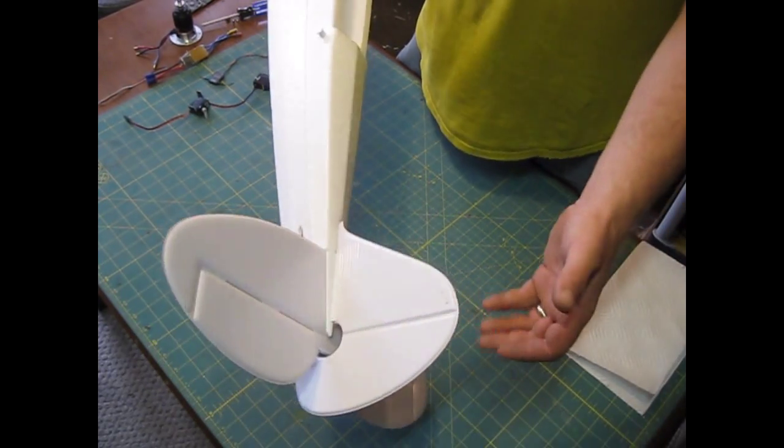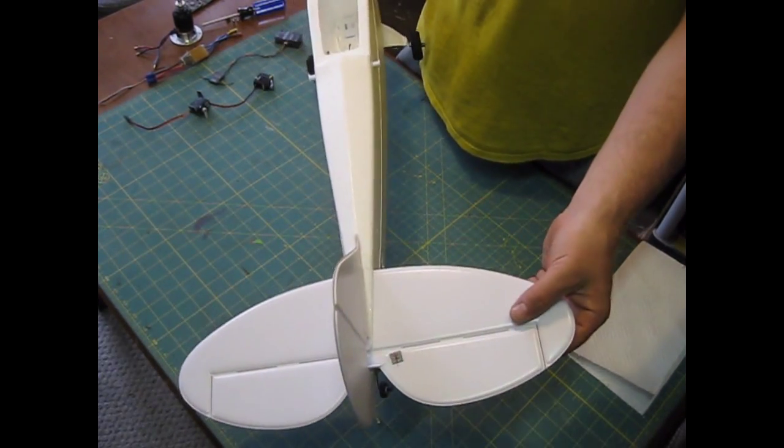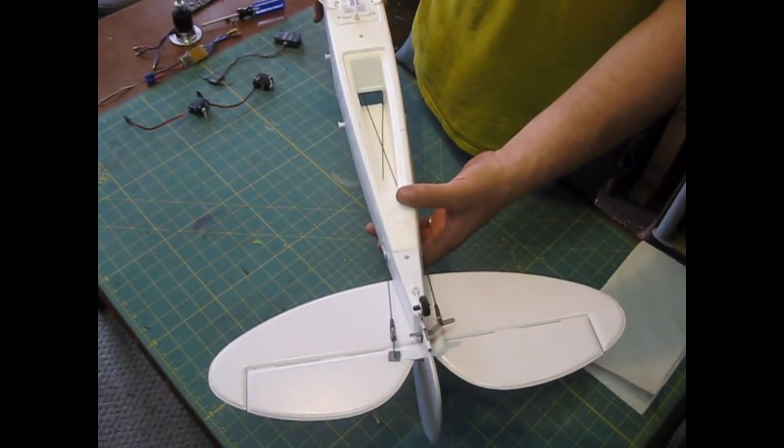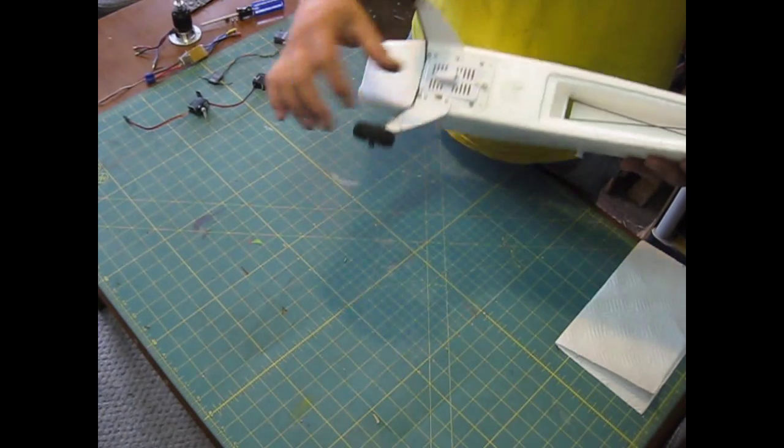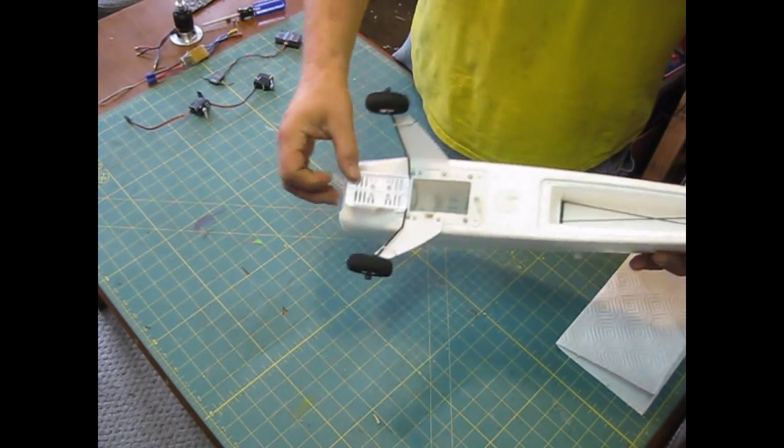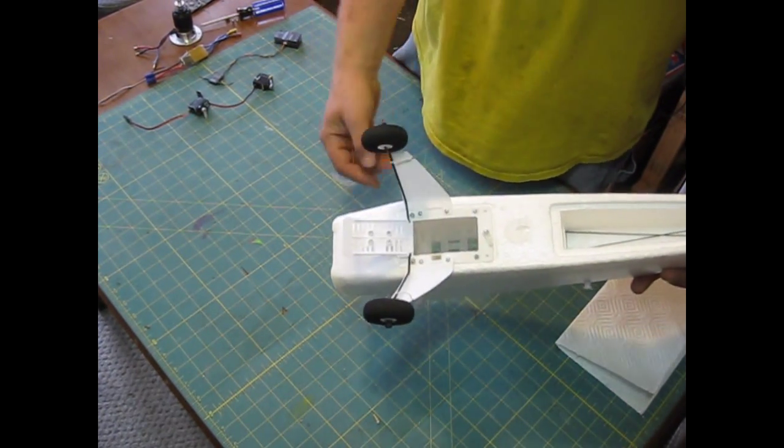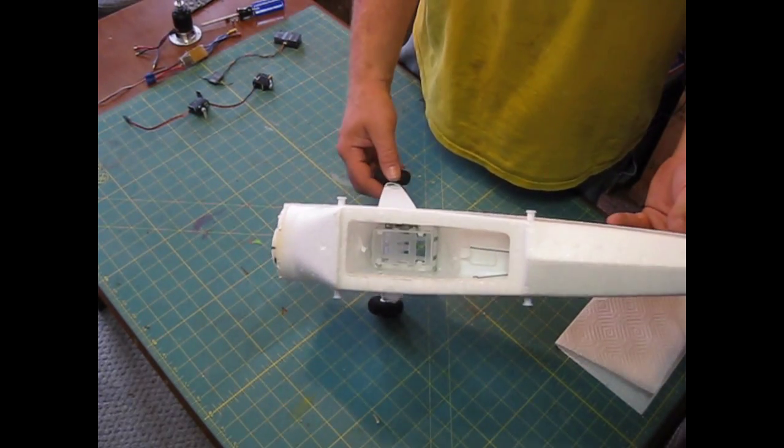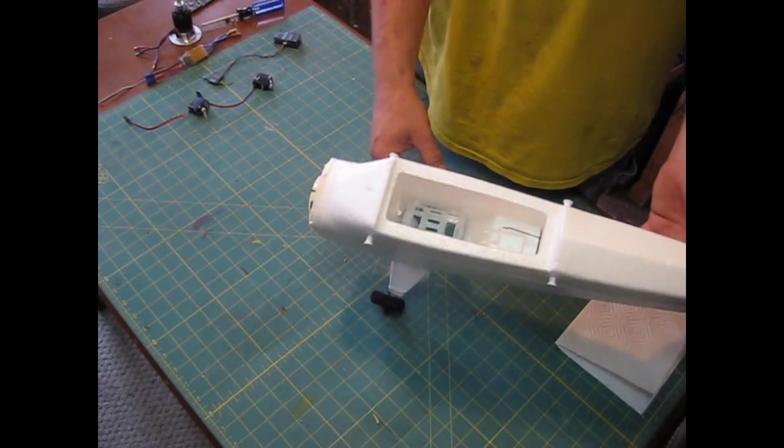Okay, we've got our vertical stabilizer and elevator already mounted, the clevis and control arms are already hooked up. Today, we're going to open up and cut some of the battery box out so that we can fit the larger 3-cell battery in, the 2200 milliamp 3-cell.